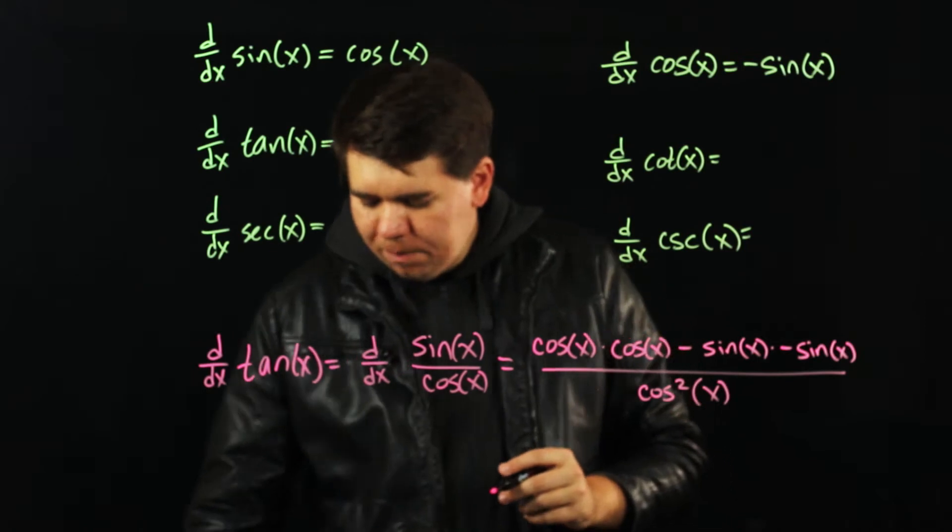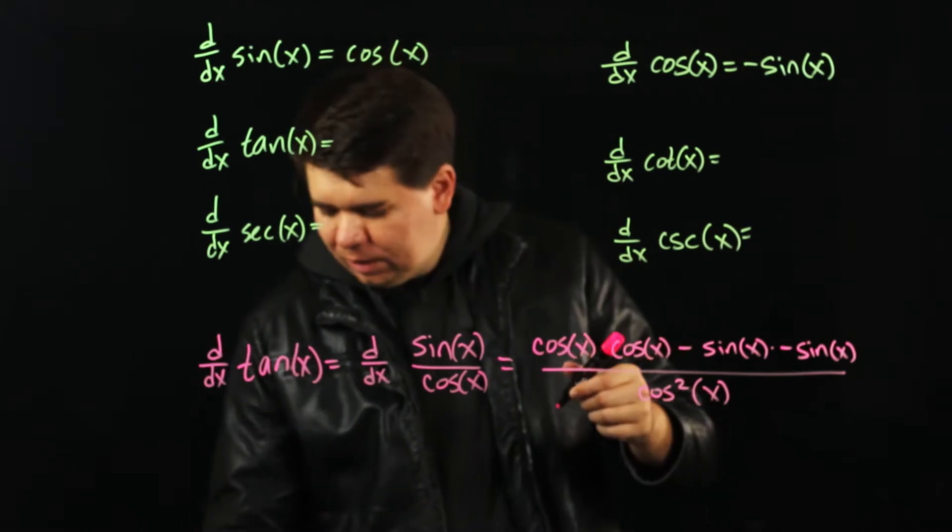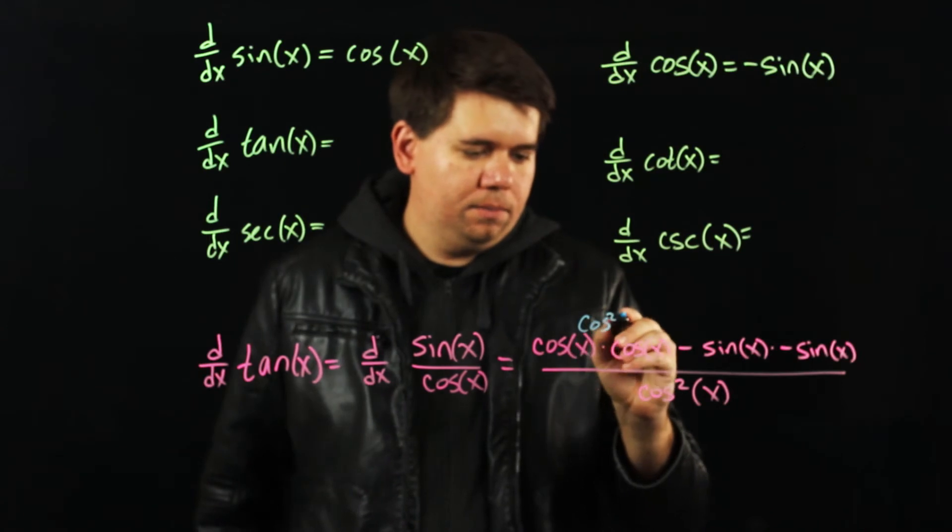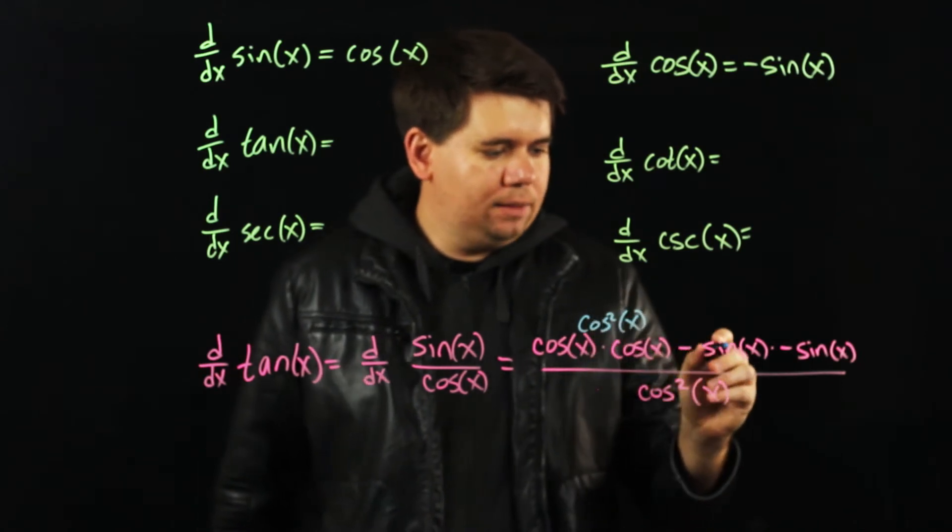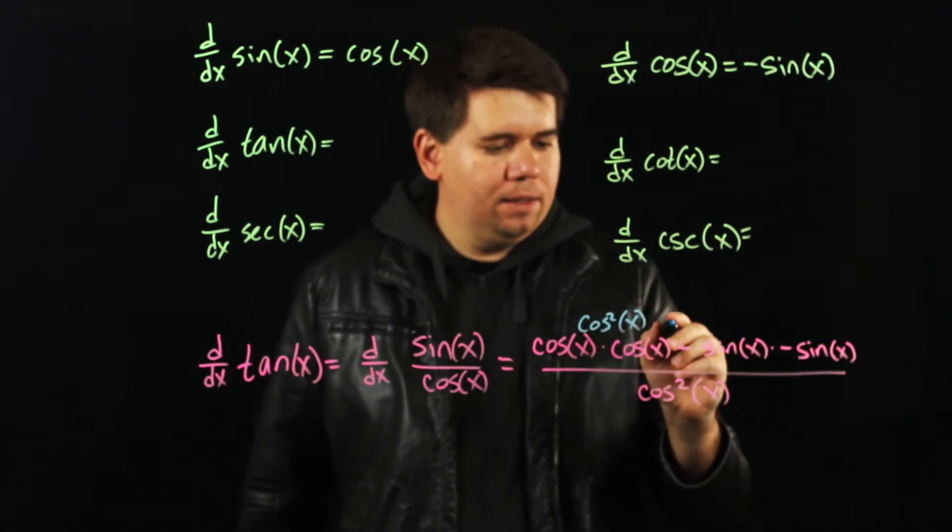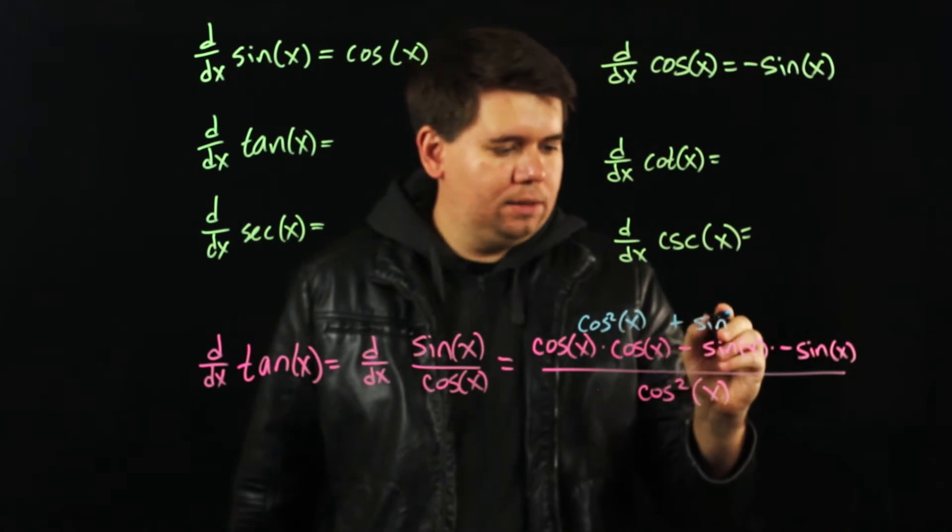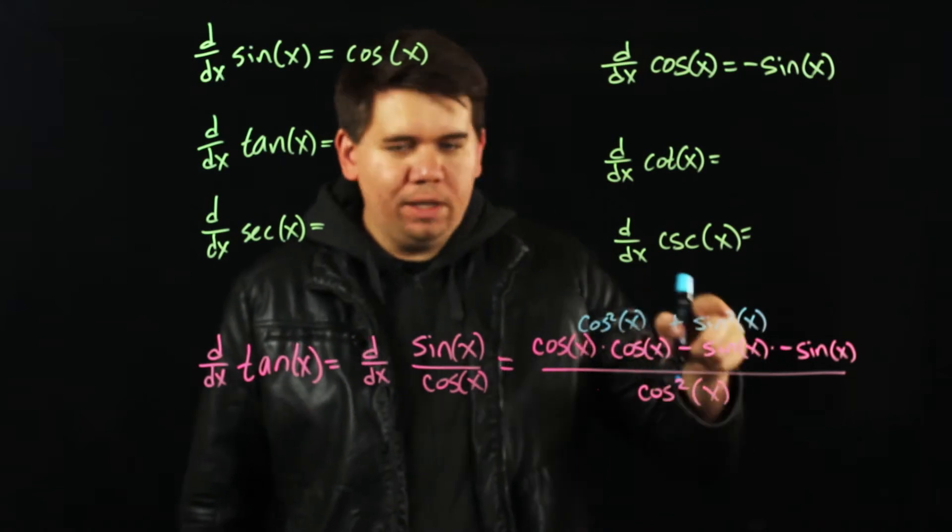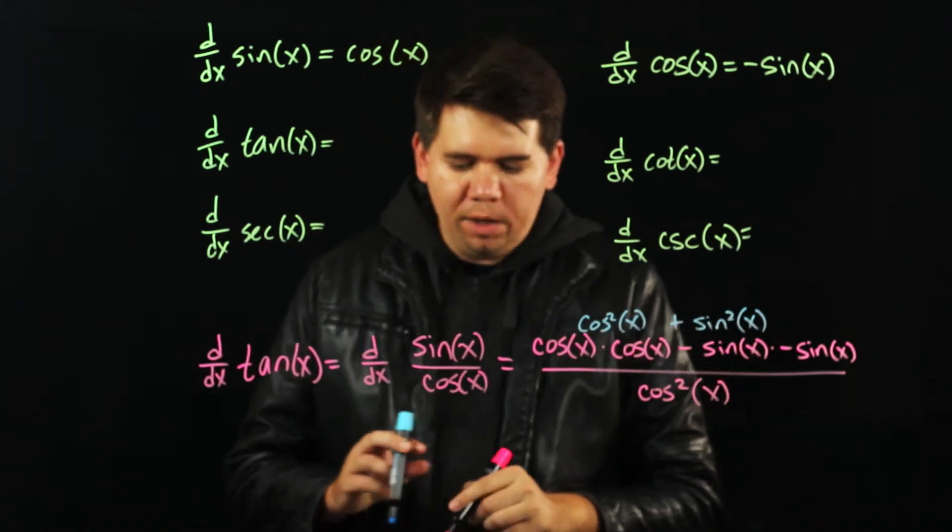Here on top I get cosine times cosine, that is cosine squared of x, minus sine times minus sine, that's plus sine squared of x. But you know that cosine squared plus sine squared for any angle x is just 1.